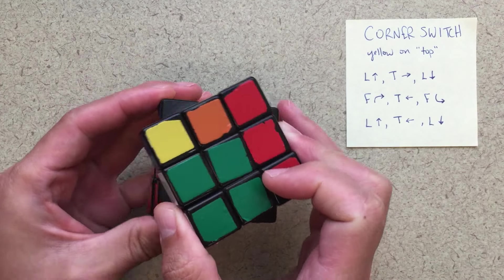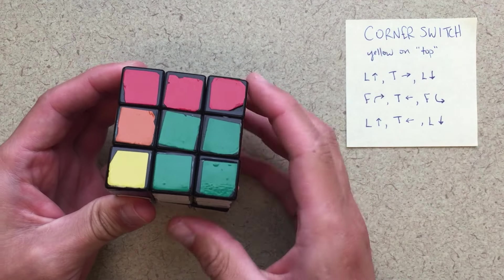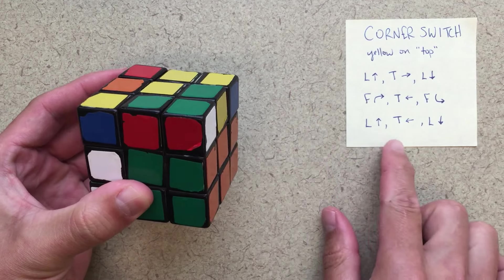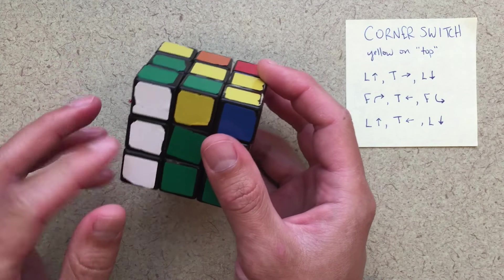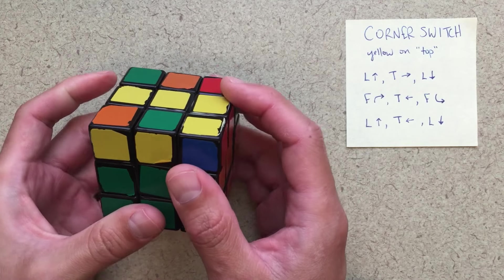Front face clockwise, top to the left, front face counterclockwise, just reversing that. Left up. So now we're here, down here, top to the left, lining up those whites, and then left back down.